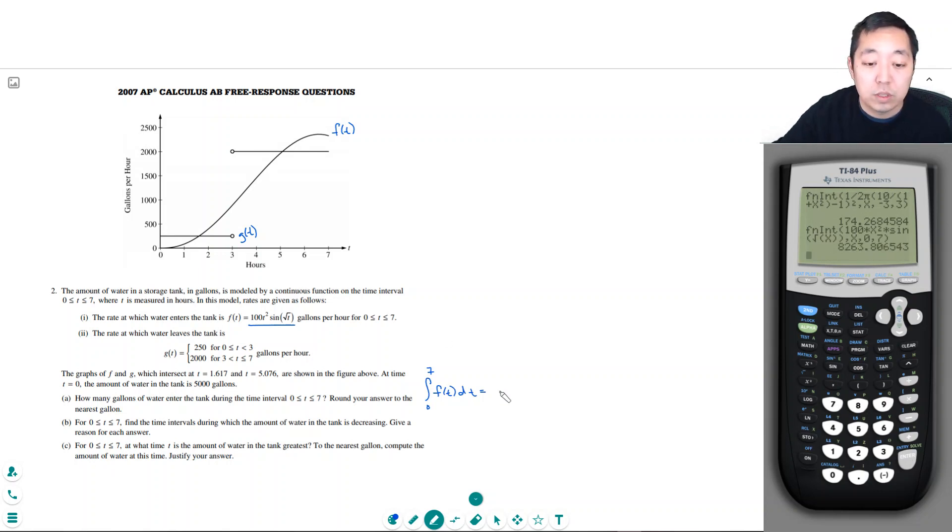From x from 0 to 7. That equals 8263.8. Oh, nearest gallon is what they asked for. 8264 gallons. So that's part A.